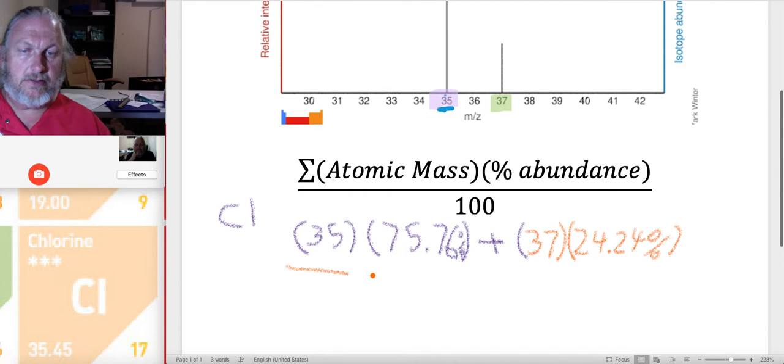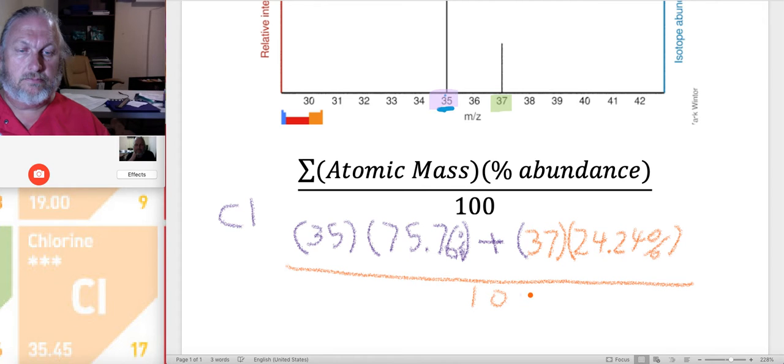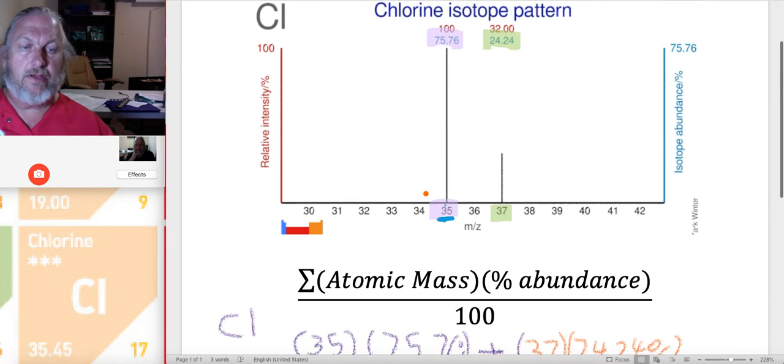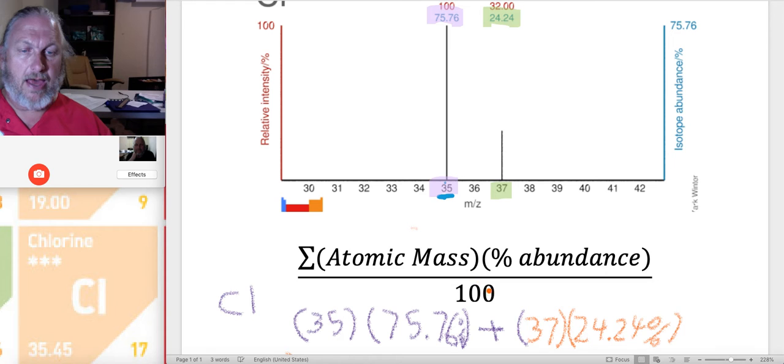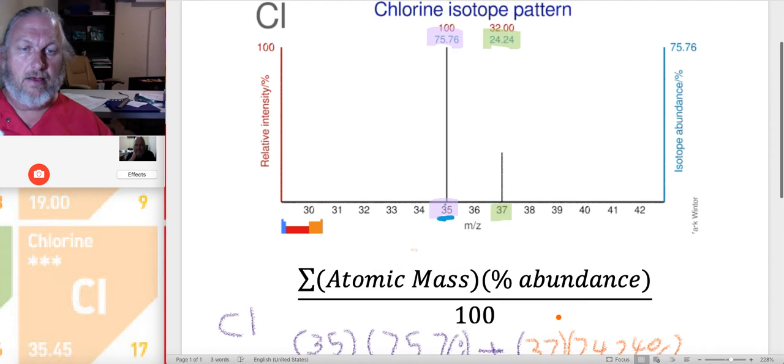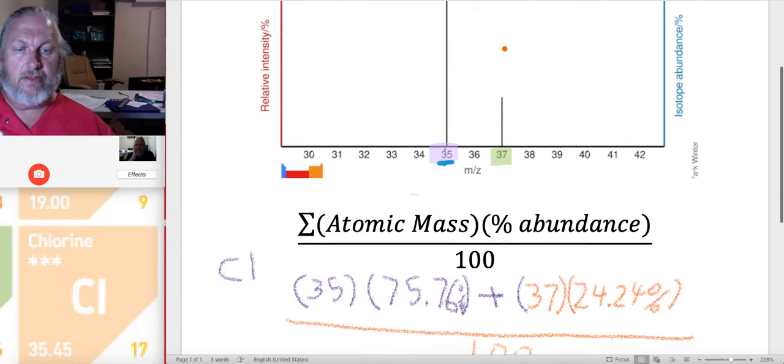And I'm going to do like that. Now all of this is divided by 100. And again, just to review real quick, that's the mass number of that isotope. This is the percentage, which we got from the mass spectra. This is the mass number of that isotope, which we got from the mass spectra. This is the percentage abundance, which we found right there in the mass spectra.